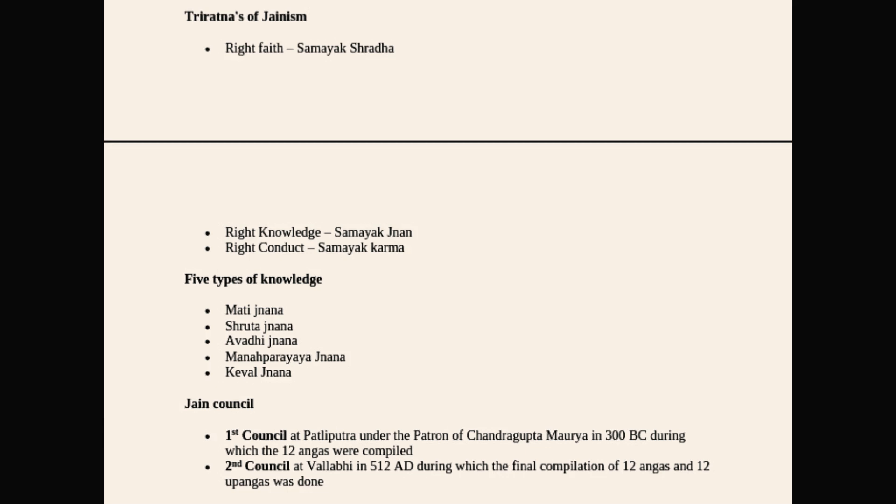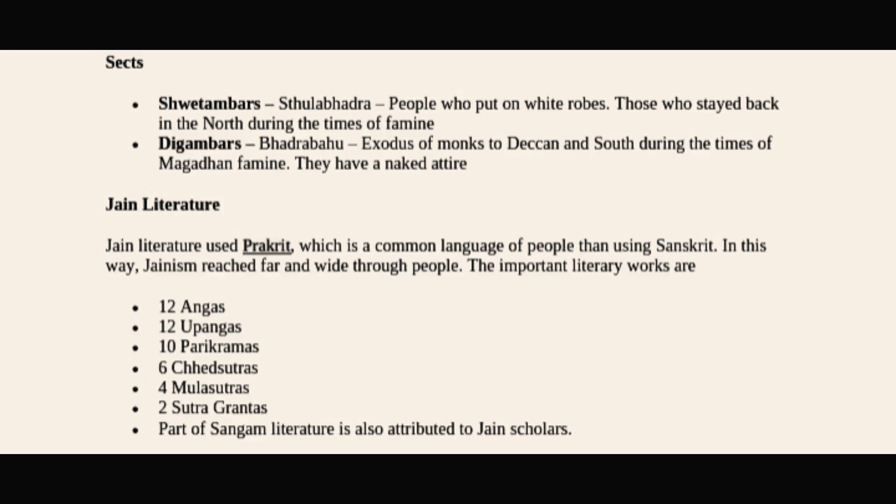There are two Jain Councils. The first council was held at Pataliputra under the patronage of Chandragupta Maurya in 300 BC, during which the 12 Angas were compiled.